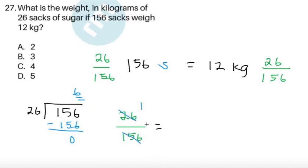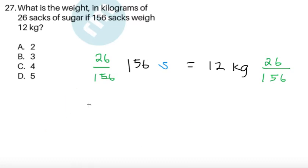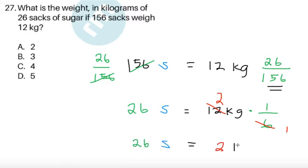So cancelling, we get 1 and 6 respectively. So it's going to be 1 sixth. So going back to the item, we know that 26 over 156 is just 1 sixth. So in fact, we can cancel this already. So 26 sacks is equal to 12 kilograms. But this 26 over 156, that's equivalent to 1 sixth. So we're multiplying 1 sixth over here. So we can cancel 12 and the 6. That gives us 2 and 1. So 26 sacks, that's equal to 2 kilograms. So we have choice A over here.